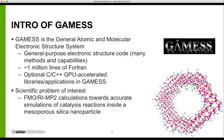One of the Exascale Computing Project's main focuses is to use a method in GAMESS, FMORIMP2, to run accurate simulations of catalysis reactions inside giant molecules like a mesoporous silicon nanoparticle. The current code is parallelized with MPI plus OpenMP CPU threading, and although this scales well on current CPU-only systems, on upcoming systems the majority of computing power will be on GPUs. So the node-level parallel programming model has been updated to use OpenMP to offload computationally expensive regions to GPUs.